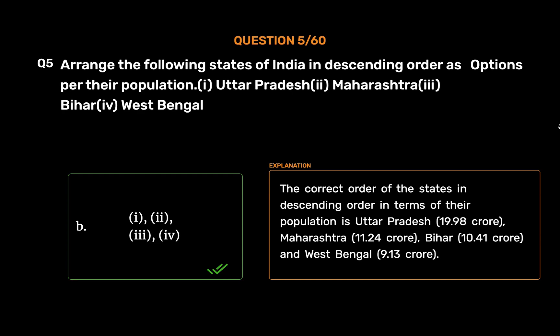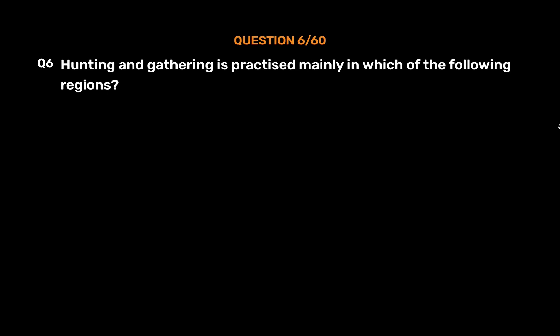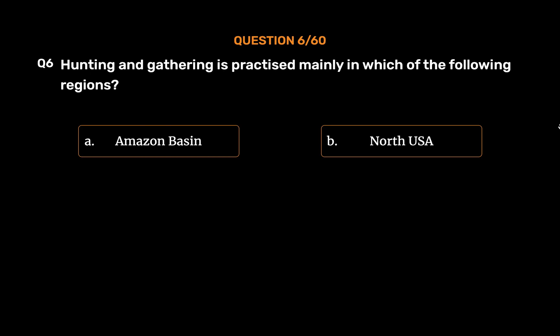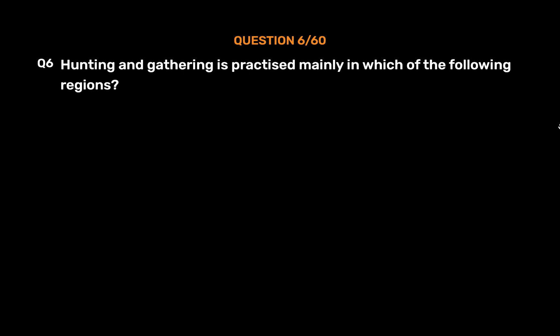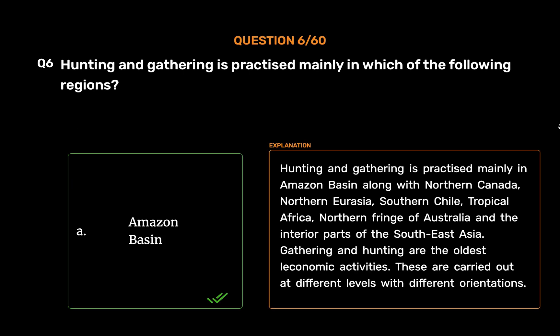Question number 6: Hunting and gathering is practiced mainly in which of the following regions? Option A: Amazon basin, option B: North USA, option C: tropical Sahara, option D: Andes. The correct answer is option A, Amazon basin. Hunting and gathering is practiced mainly in the Amazon basin, along with northern Canada, northern Eurasia, southern Chile, tropical Africa, the northern fringe of Australia, and the interior parts of Southeast Asia. Gathering and hunting are the oldest economic activities.